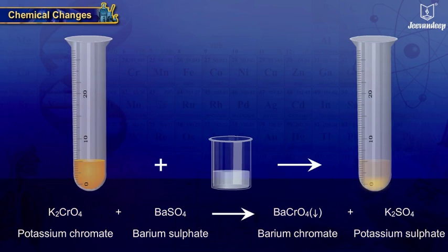Bright yellow solution of potassium chromate reacts with barium sulfate to give yellow precipitate of barium chromate and solution of potassium sulfate.